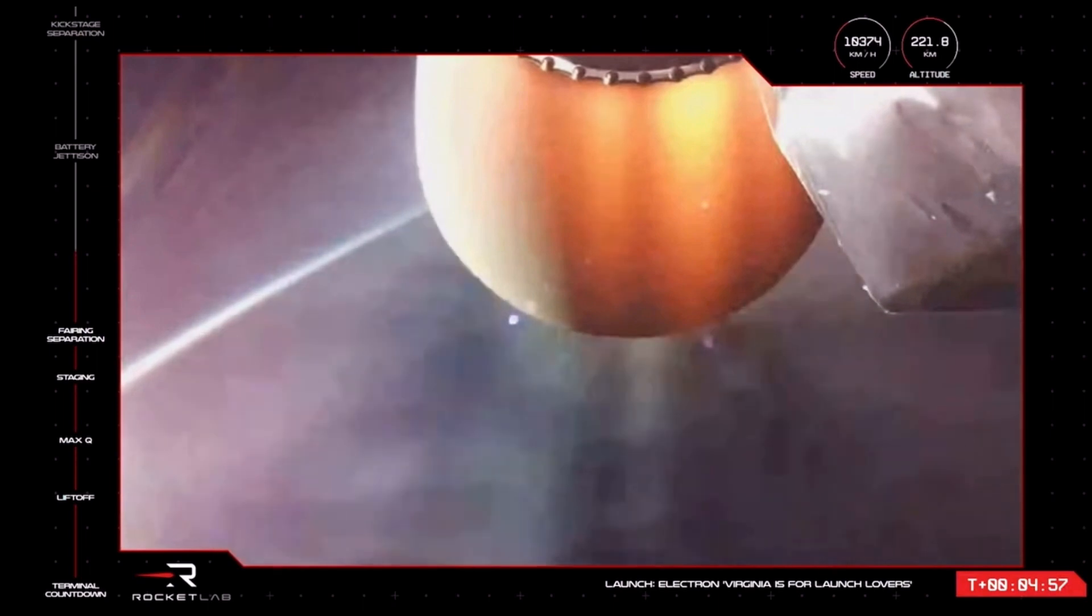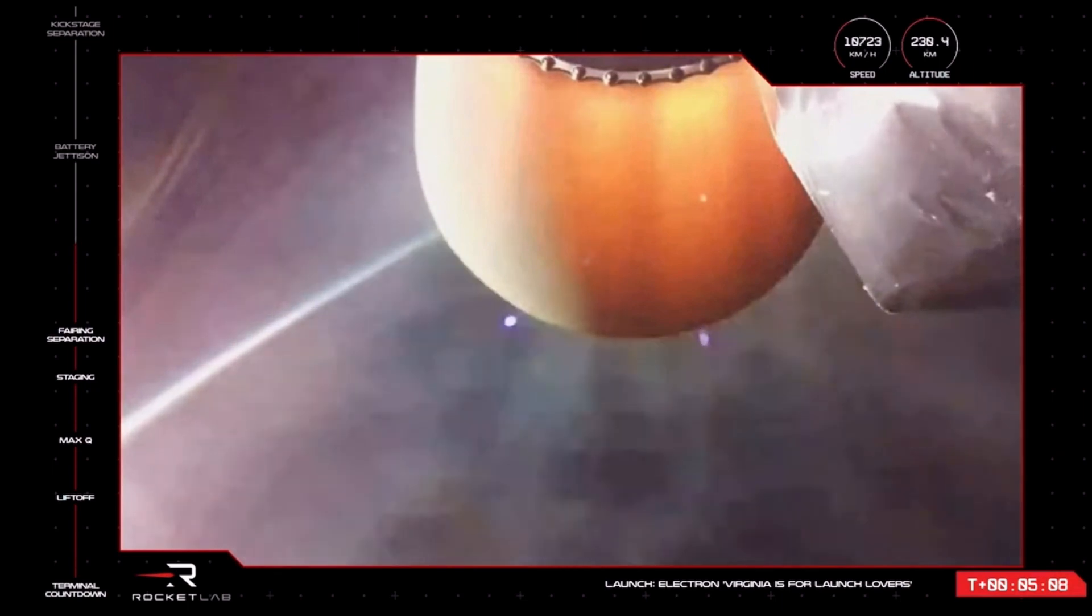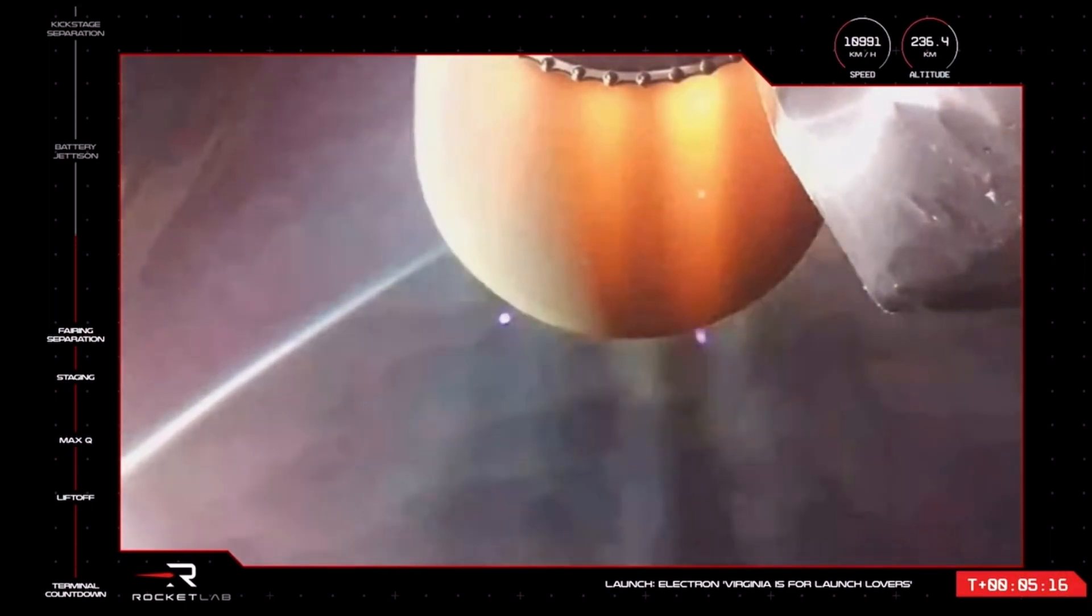Checking in on the clock, and we are just about T-plus 5 minutes into the mission. Hearing nominal calls here from our launch operators in Mission Control in Virginia and Auckland. The second stage Rutherford engine is putting out a maximum of 5,800 pounds of thrust on its way to delivering our customers' payloads to orbit. At liftoff, the rocket weighed about 13 metric tons altogether.